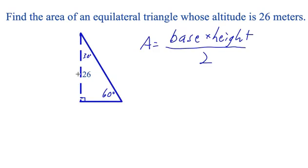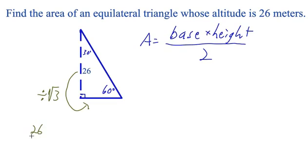But in this case, we need to work backwards from the long leg to figure out the short leg. So we're going to divide the length of the long leg by the square root of 3. The length of the long leg divided by the square root of 3 is about equal to 15.01, so the length of the short leg here is about 15.01.